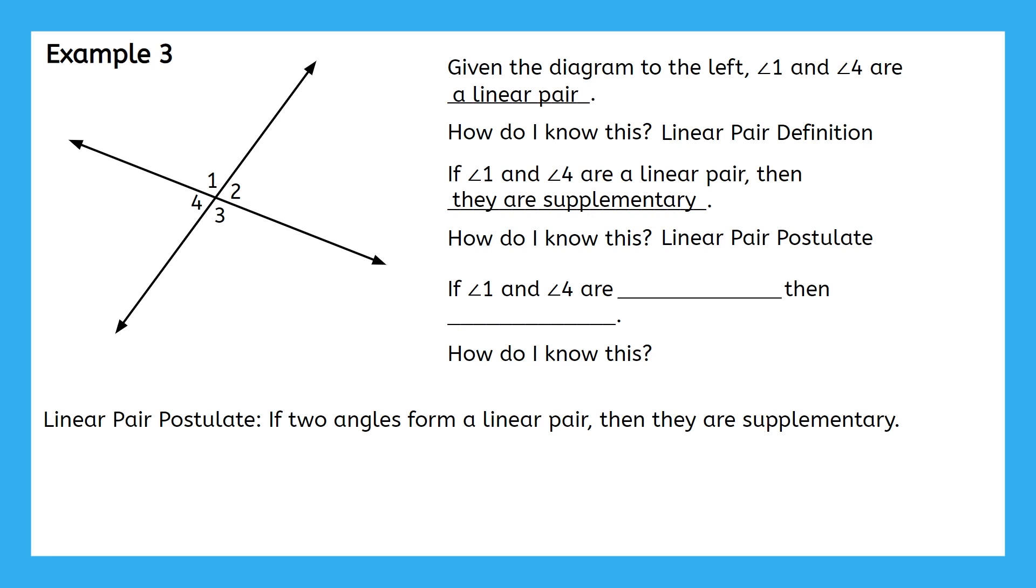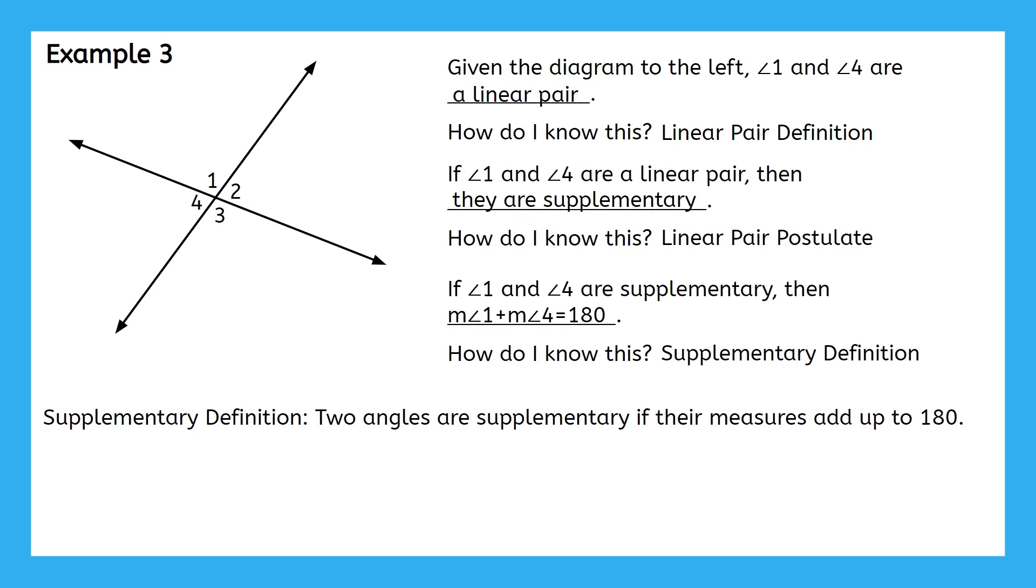And then, the most tricky one, is once we know that angles 1 and 4 are supplementary, then what else can we say about them? But what do we know about supplementary angles? The sum of their measures is 180 degrees. So we can say that the measure of angle 1 plus the measure of angle 4 will equal 180. Which property is it that tells us this? The supplementary definition.